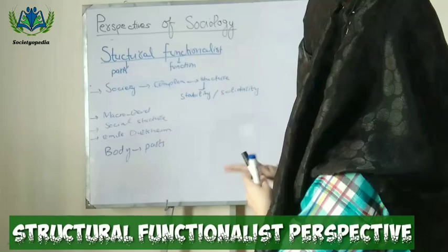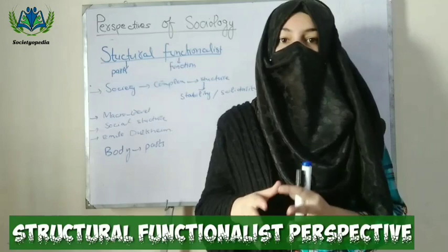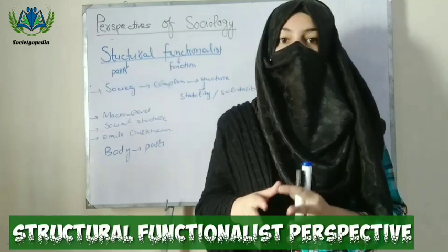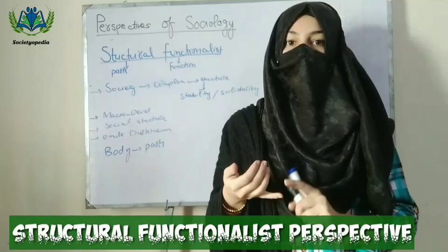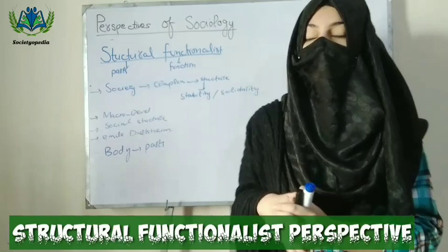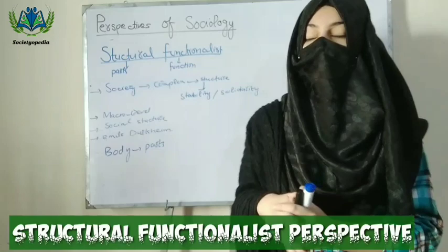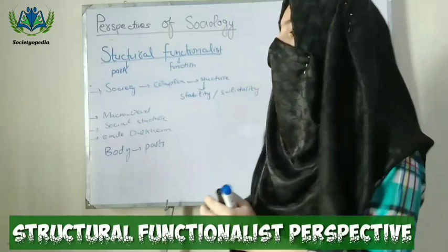Just as our body has different structures — hands, arms, legs, eyes — all working together so the whole body runs smoothly, society also has different parts and structures. Education, family, religion, politics, and economics are like the body parts and organs of society, and in this way society works and runs smoothly.